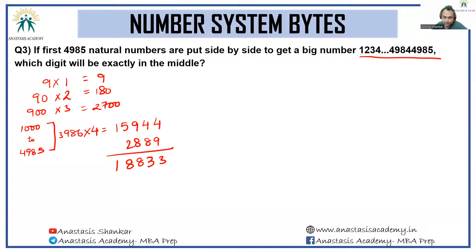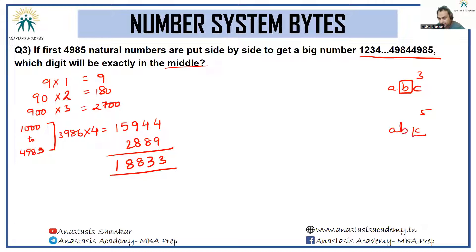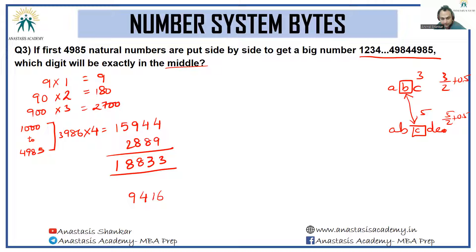With 18,832 total digits, the middle digit is at position 18832/2 + 0.5 = 9416.5 + 0.5 = the 9417th digit. Subtracting the 2889 single/double/triple-digit contributions: 9417 − 2889 = 6528. So I am looking for the 6528th digit among the four-digit numbers.